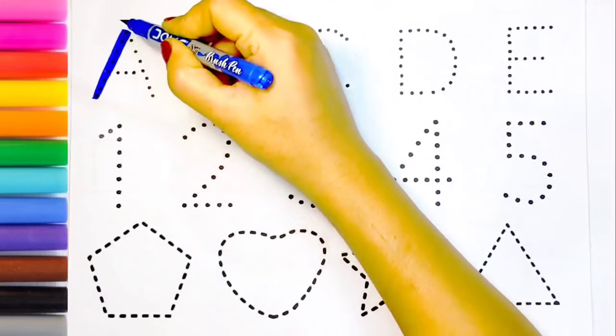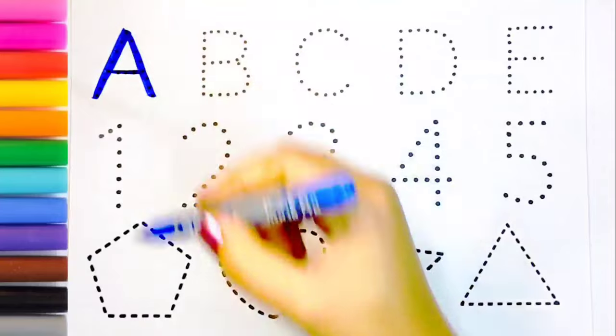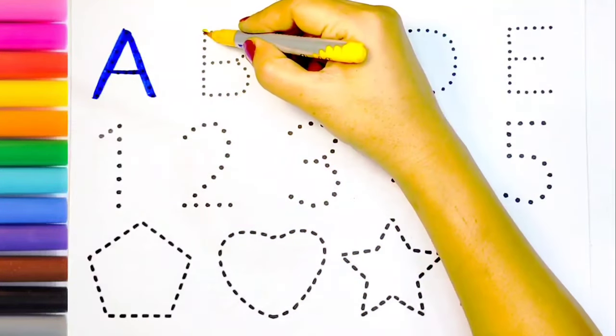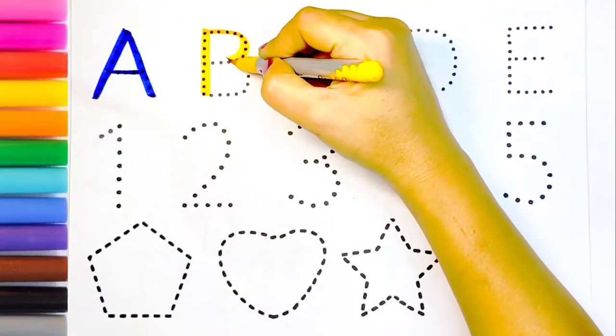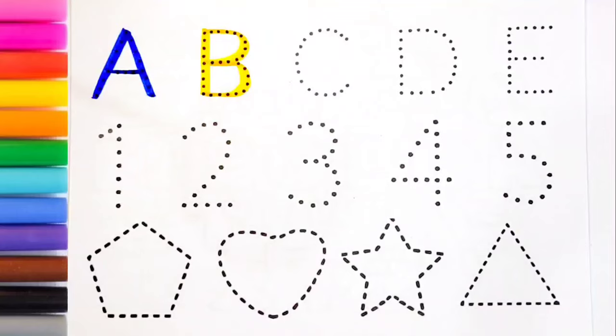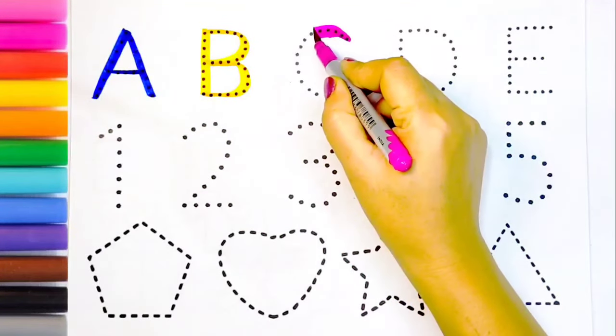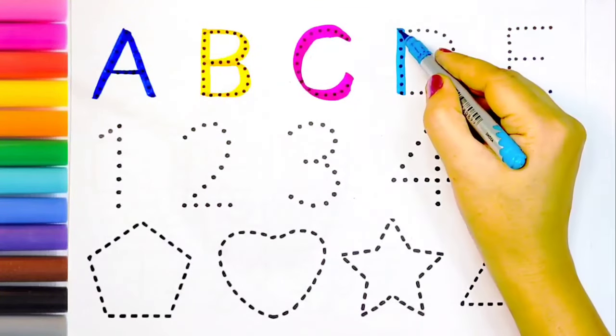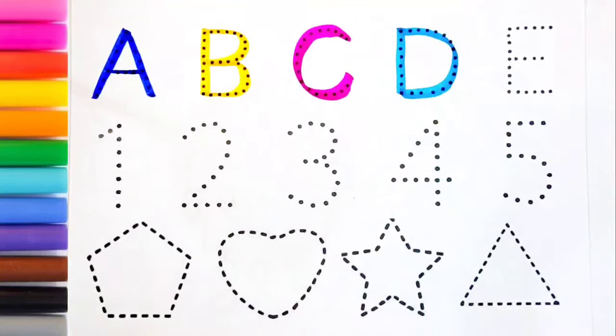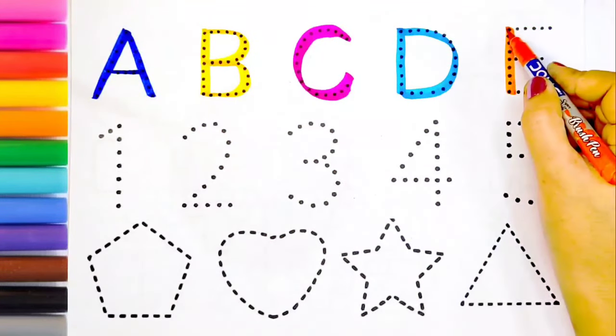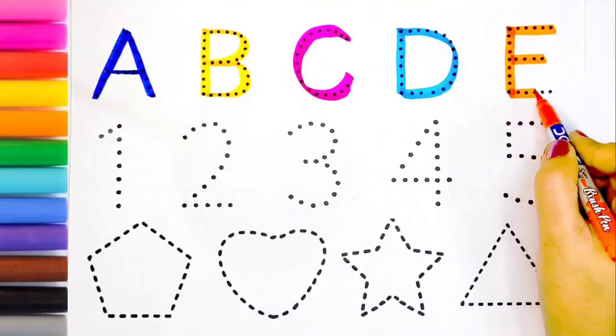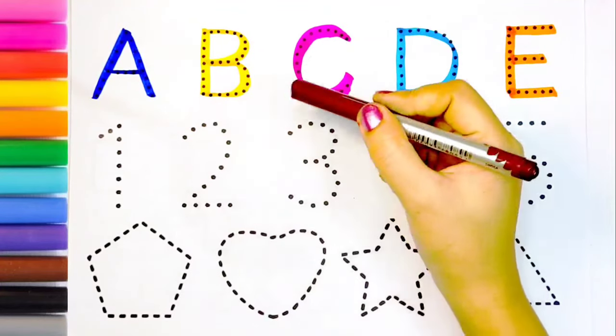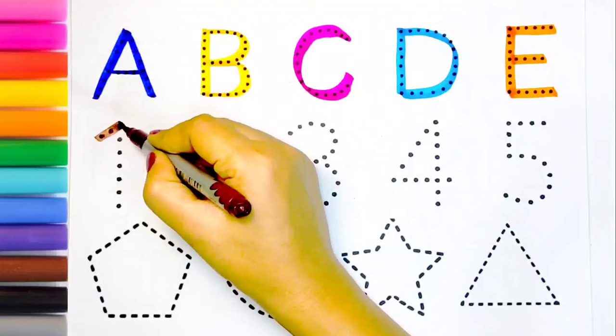Blue color. A, A for apple, yellow color. B, B for baby, pink color. C, C for cat, sky blue color. D, D for dog, orange color. E, E for elephant, brown color.